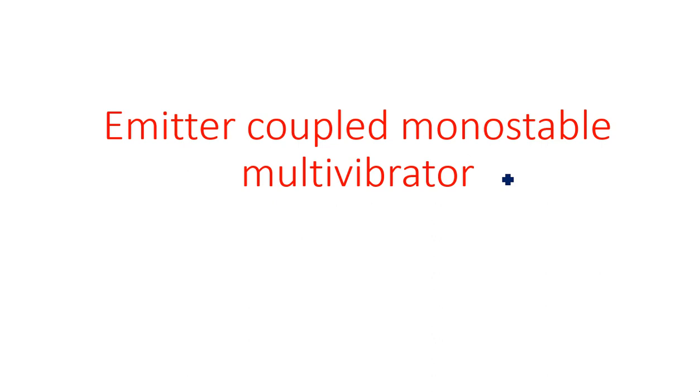In this video I am going to explain the second type of monostable multivibrator, which is the emitter coupled monostable multivibrator. There are two different types of monostable multivibrator: one is collector coupled monostable multivibrator, which we have seen so far, and the second type is emitter coupled monostable multivibrator, where the emitters of both transistors Q1 and Q2 are connected together and grounded through a resistor Re.